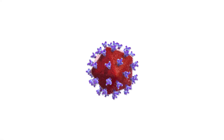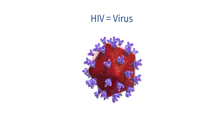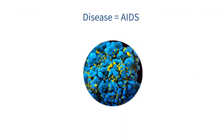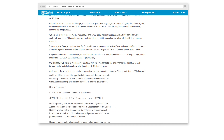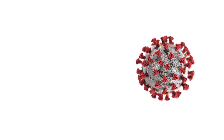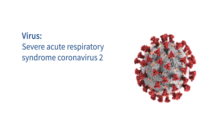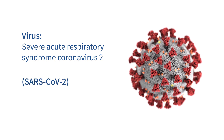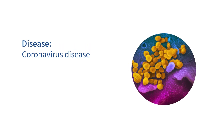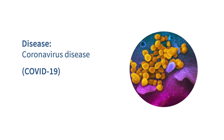Viruses and the diseases they cause often have different names. For example, HIV is the virus that causes the disease AIDS. On February 11, 2020, the official names of the new virus and disease were announced. The virus has been identified as Severe Acute Respiratory Syndrome Coronavirus 2, which abbreviates to SARS-CoV-2. The disease caused by SARS-CoV-2 has been named Coronavirus disease, which abbreviates to COVID-19. So we should refer to SARS-CoV-2 as the virus that causes COVID-19, the disease.